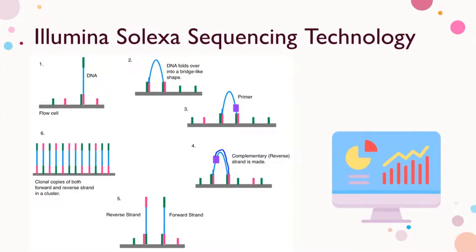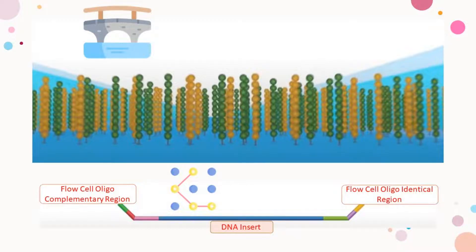The DNA attaches to the flow cell via complementary sequences. The strand bends over and attaches to a second oligo, forming a bridge. A polymerase synthesizes the reverse strand, then the two strands release and straighten. Each forms a new bridge — bridge amplification. The result is a cluster of DNA forward and reverse strand clones. Here is a quick look at the complementary sequences within the DNA insert that are important in the formation of bridge amplification within the flow cell.